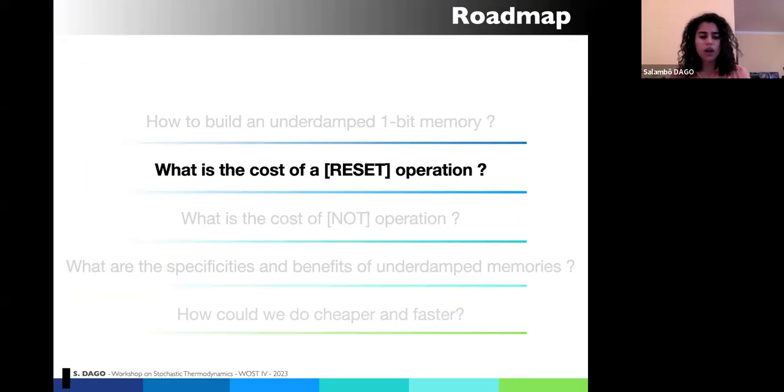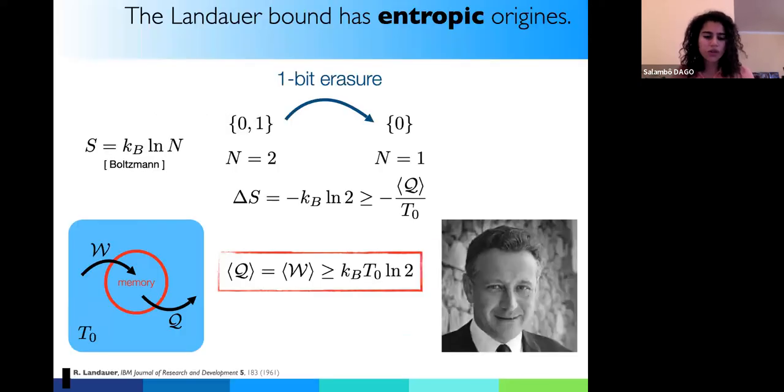And now I will use it to figure what is the thermodynamic cost of different operations. First reset, and then we will go on to NOT operation. So a reset operation is also called an erasure, and we expect this fundamental lower bound. Just to go back a bit on the context. Basically, when you reset your memory, when you erase an information, you start with two possible states, zero or one, two possible information. And you want to reset your memory to state zero, whatever was the initial state. So doing that, you're compressing the phase space, you're shrinking the number of states available by the system from two to one. And if I choose to write the Boltzmann definition of the entropy, you can see that this comes with an entropic loss.